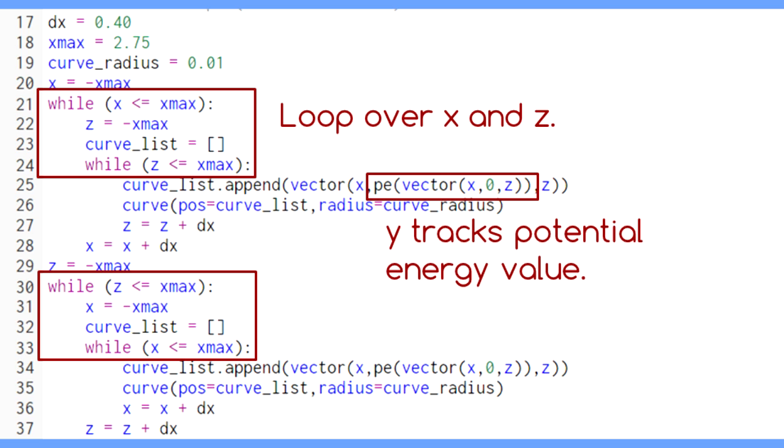Since we're going to need to use the Y direction to show the hilliness of our potential energy, we can only work with motion along the X and Z directions.